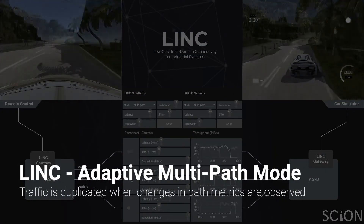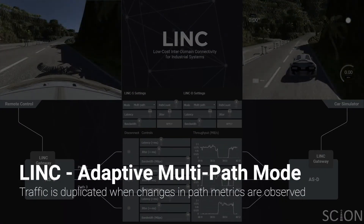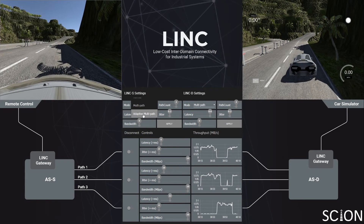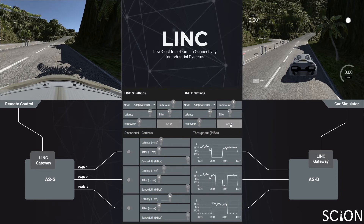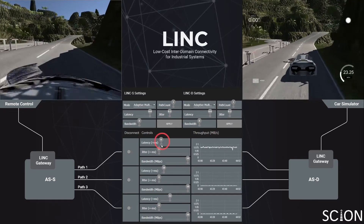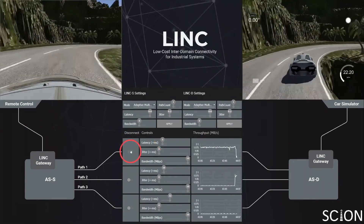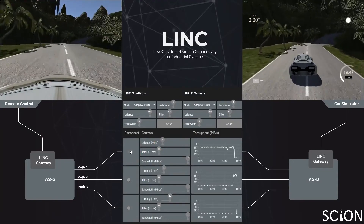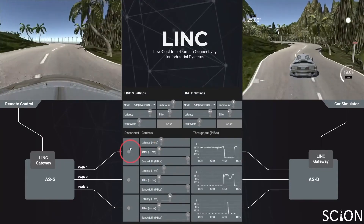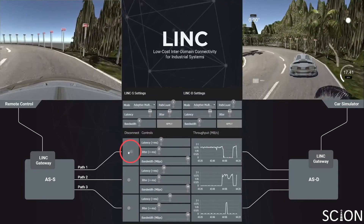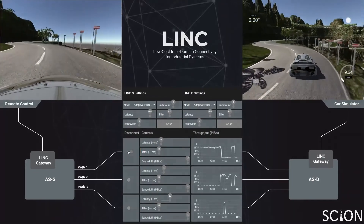In the final scenario, LINK is running in adaptive multi-path mode. In this mode, traffic is duplicated only when a change in path metrics is observed, so as to make a new connection before the current connection breaks. This mode provides high availability without the high network utilization of duplicating traffic all the time. The increase in latency resulted in duplication of traffic on path 2, so the remote control runs unaffected even when path 1 is disconnected. Path 1 is disconnected again to show the faster failover in adaptive multi-path mode.